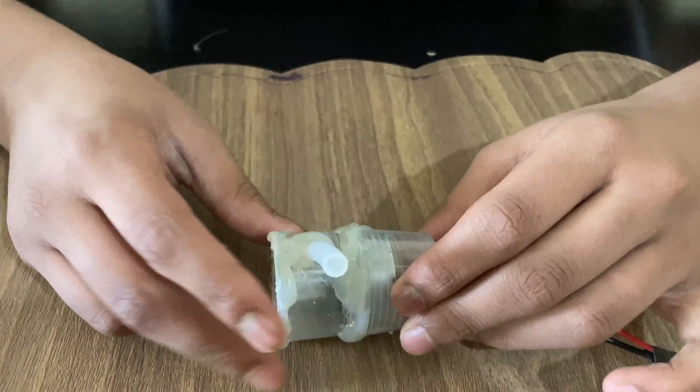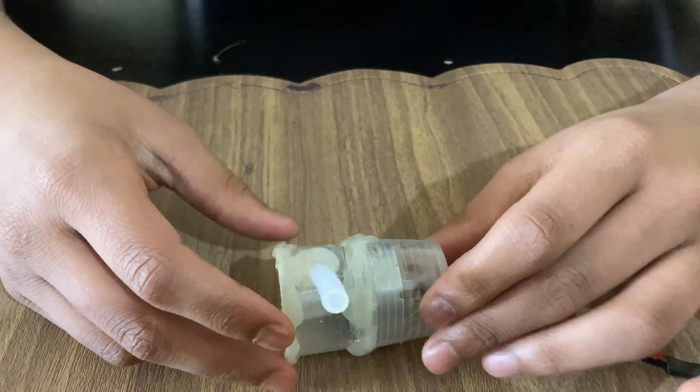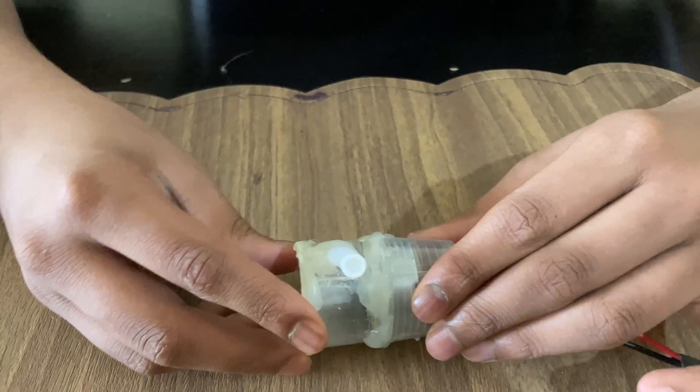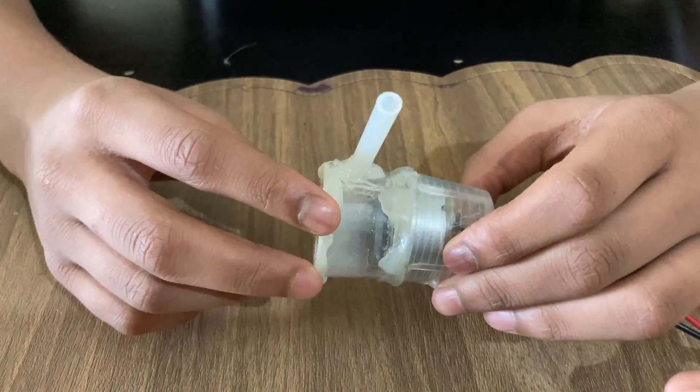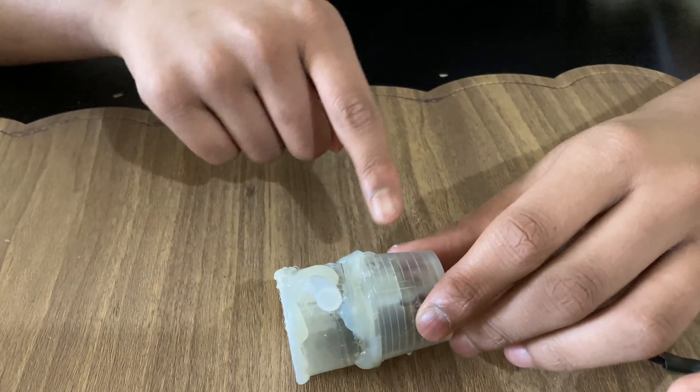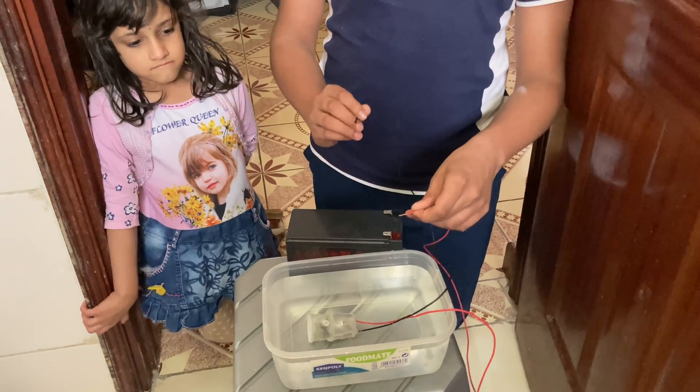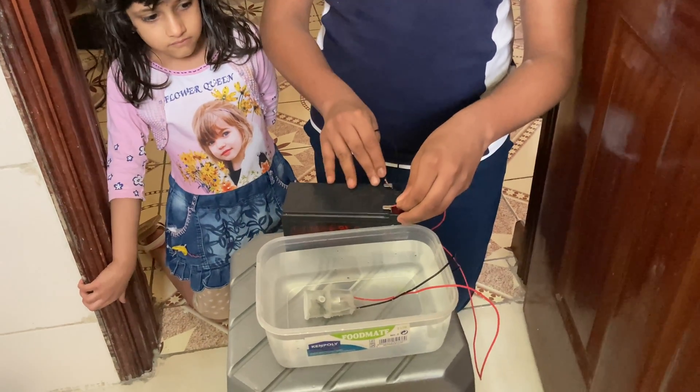So my water pump is ready. Why I've put all this glue is because, and why I've made it watertight is because I want to put the pump inside water so the water does not go inside. So let's see if it works. I'm connecting it to a battery.